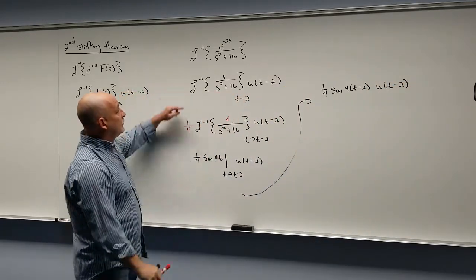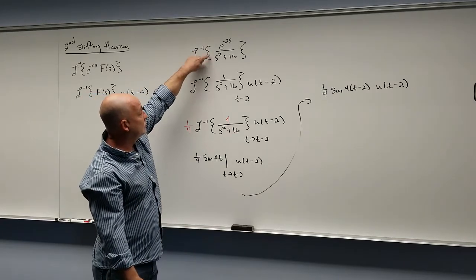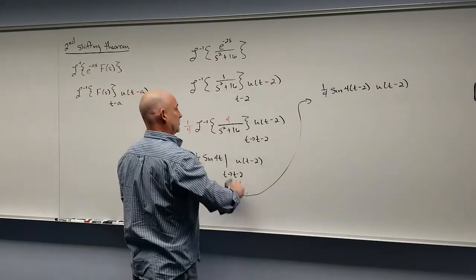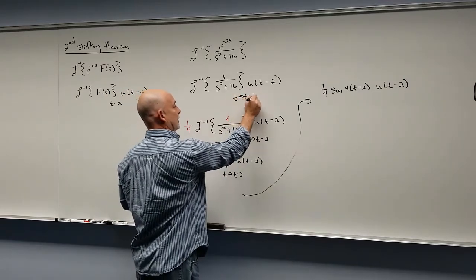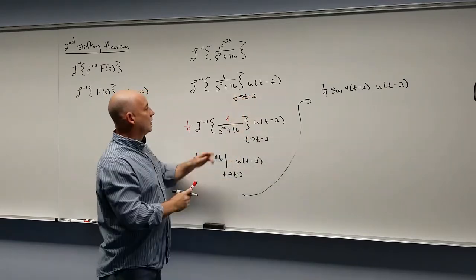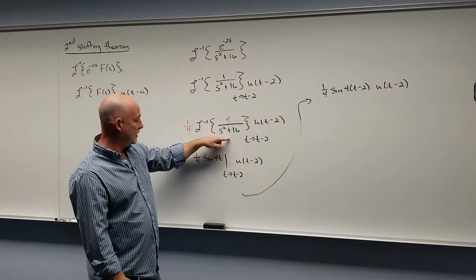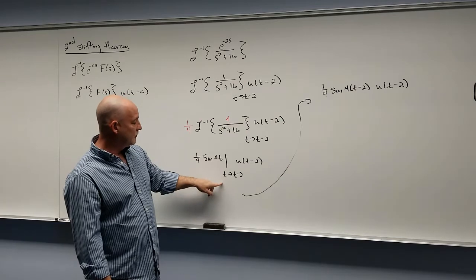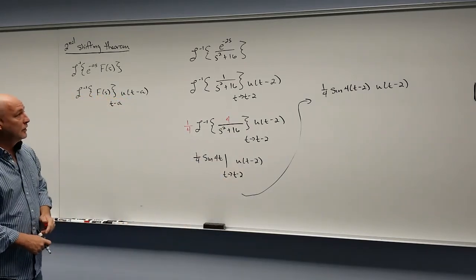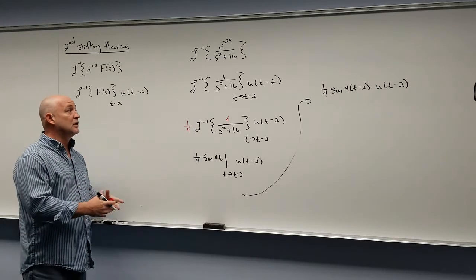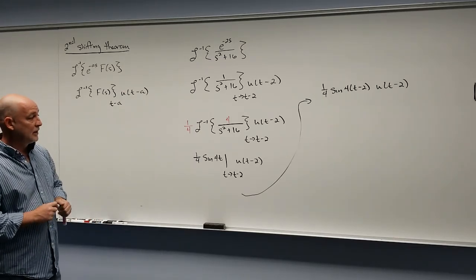There's the inverse Laplace transform when we have an exponential. When you see an exponential in the s-world, you know it's going to produce a shift — map t to t minus a — and multiply by the step function. Just do the inverse Laplace transform like you normally would, replace all the t's with your shift, and multiply by your unit step function. This is really helpful: an exponential in the s-world always means a shift and multiply by the step.